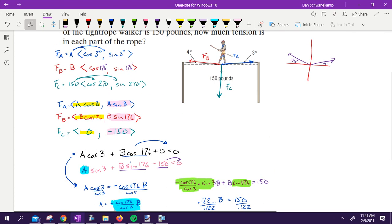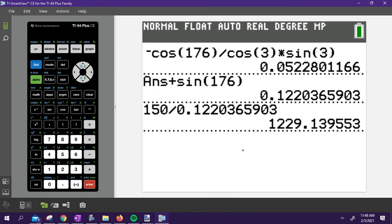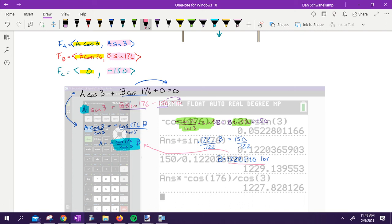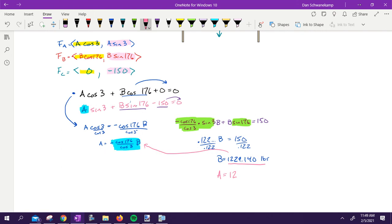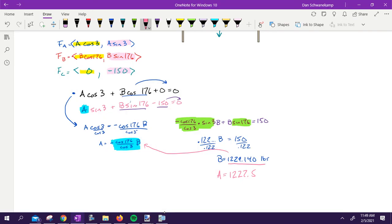So this thing right here is pulling 1200 pounds. It's a lot of force. What would I do to find the other one? Plug it in. I'm going to take this and I'm going to plug it back in for B. So it's this number right here times negative cosine of 176 divided by cosine of three. I'm just taking it and plugging it back in. I hit enter. 1227.828. It should make sense that they're pretty close together because the angles that we were using were pretty similar, three degrees and four degrees, not a whole bunch of difference.